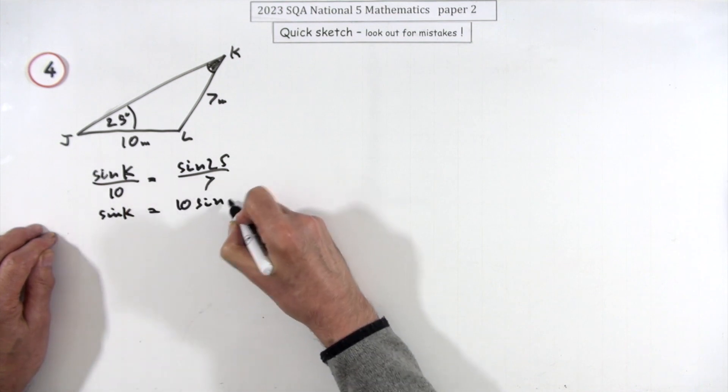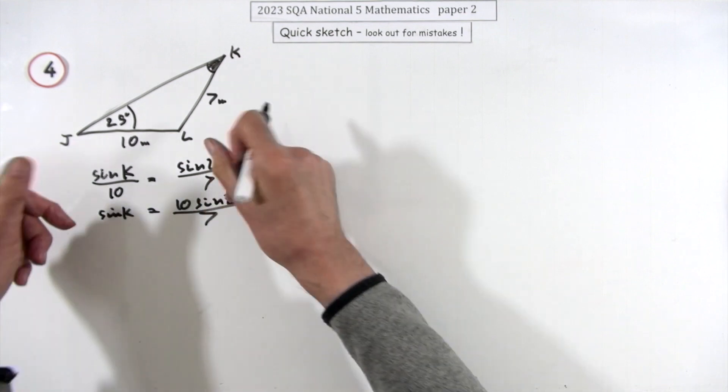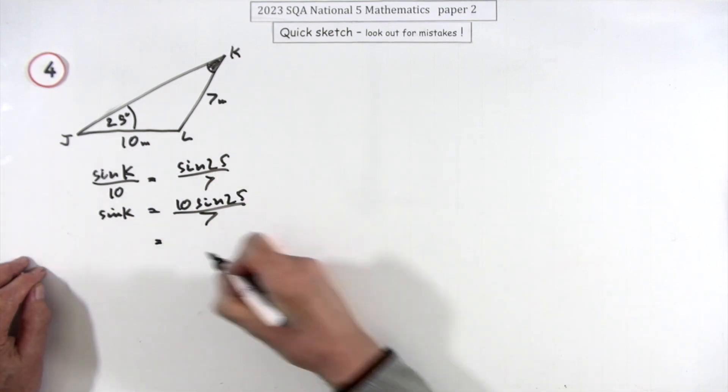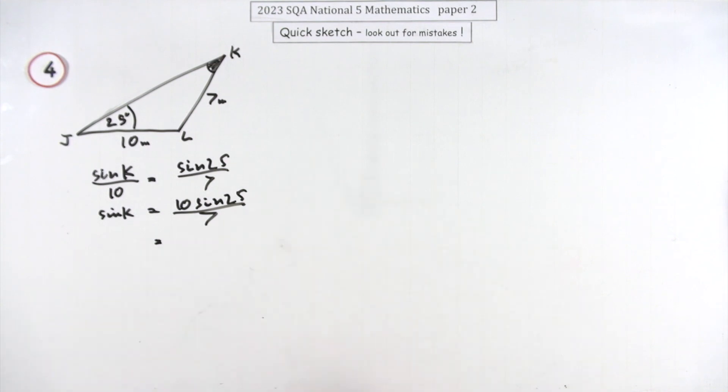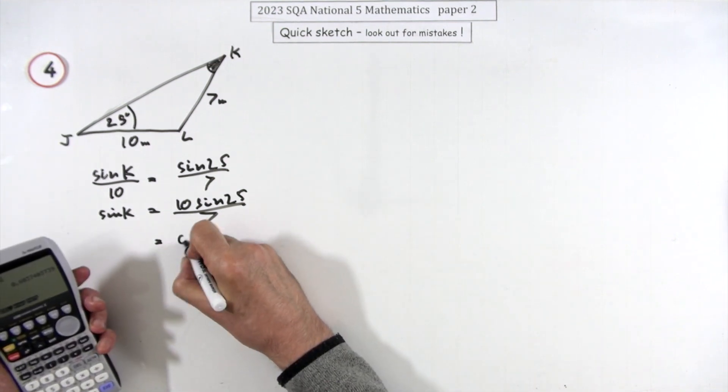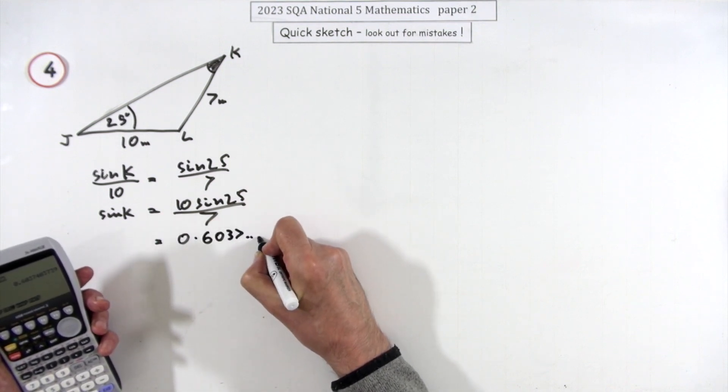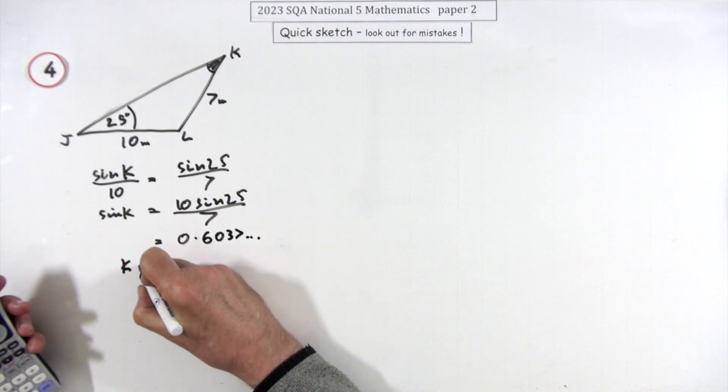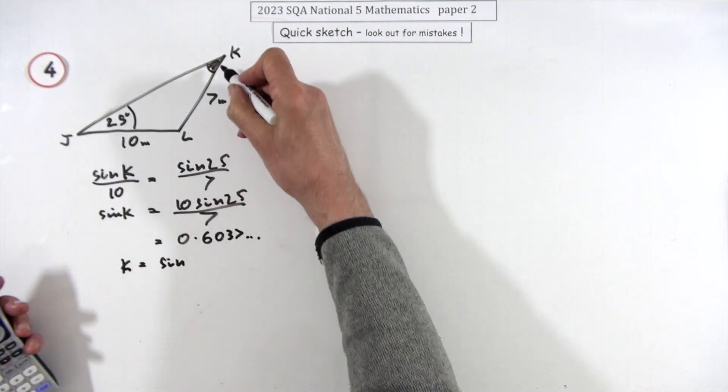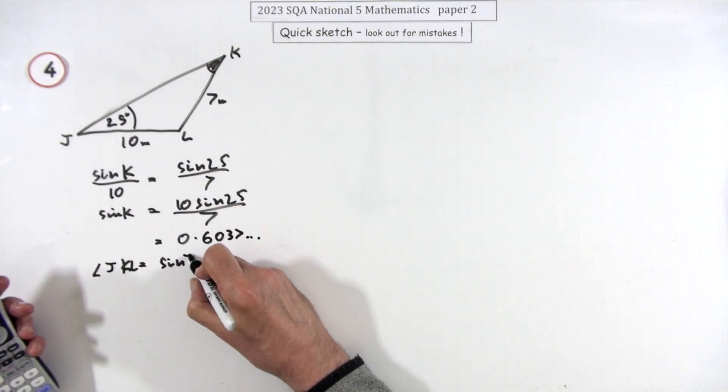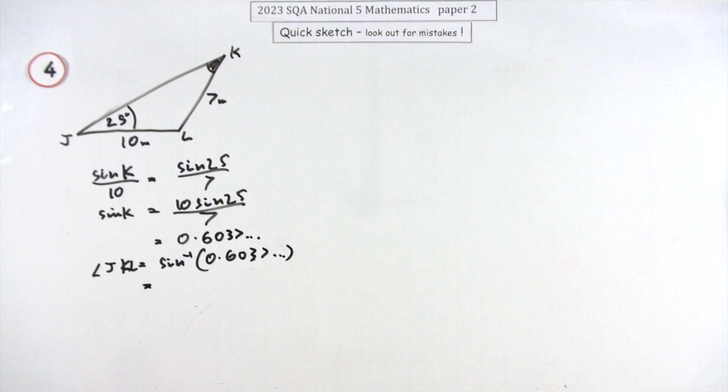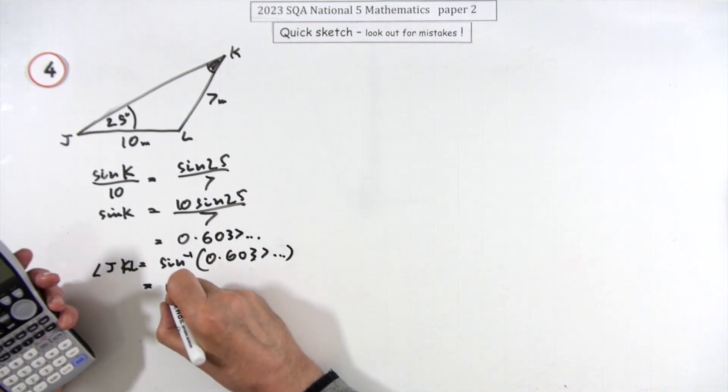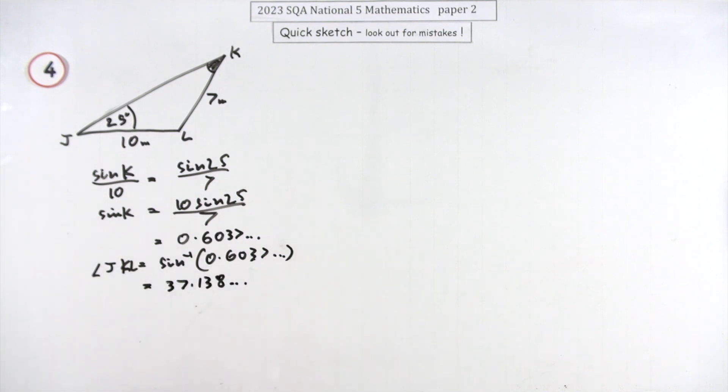So sin K will be 10 sin 25 upon 7. You may well have put it the other way around to begin with, but I'm just starting off with what I want. You could do it in one go, you could just say K is inverse sine of all that and get the answer in one go. Doing it in two stages would be: do that calculation, 0.6037 and so on, it's stored there of course. Then I could say K is going to be, I'll go back to what K actually is, so JKL is going to be inverse sine of 0.6037 and so on. Just storing it in answer and using that, I've got 37.138 and so on. So I'll call that 37.1 degrees.